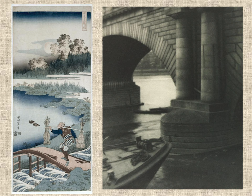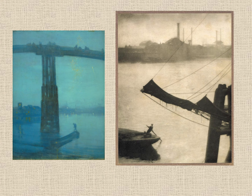Coburn was influenced by a lot of artwork. Here on the left we see a Japanese woodblock print, and then on the left James McNeill Whistler's Nocturne Blue and Gold, Old Battersea Bridge. Coburn obviously saw this at the Tate Museum and was inspired by it because he was in London and photographed Wapping in London on the right. So there's a really interesting connection — Coburn was definitely interested in painters and in graphic artwork.